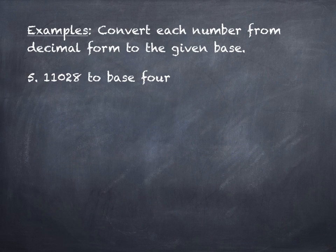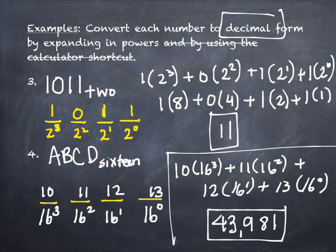Now let's look at converting in the opposite direction. What operation did we use to go from other bases into our base? Multiplication. To turn a number from their base into our base, we multiply. So what are we going to do if we turn it from our base into their base? We're going to divide, using that scaffolding division approach we've done before.